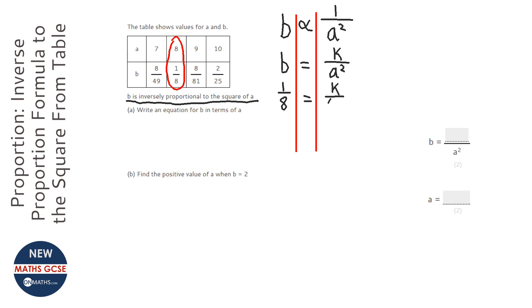So now times both sides by 64 so I can find what k is. So it becomes 64 over 8 equals k. So therefore k is equal to 64 divided by 8, which is just 8.